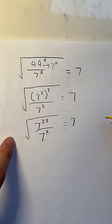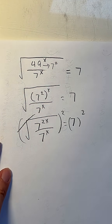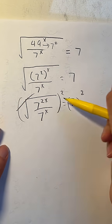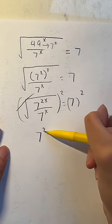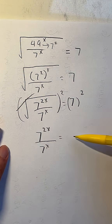And we want to get rid of the square root over here. So to do that, we're going to have to square it. So we square both sides. That's going to eliminate the square root symbol, giving us 7 to the 2x power over 7 to the x power is equal to 7 squared, which is 49.